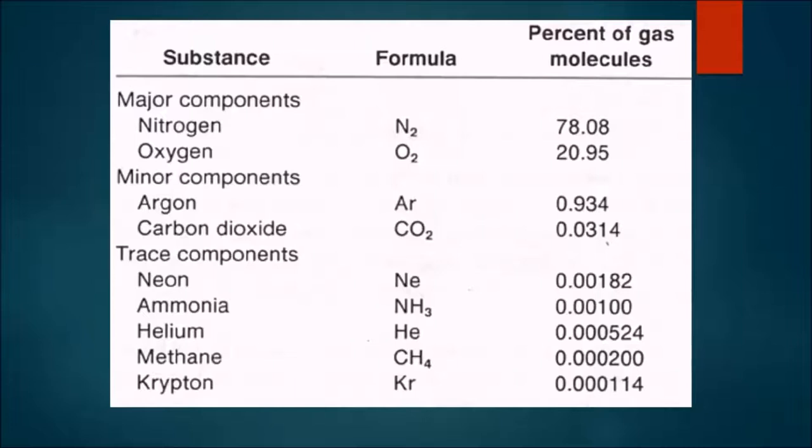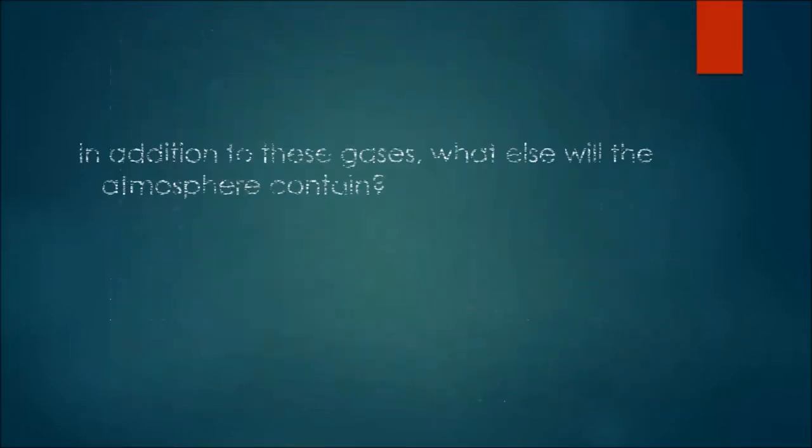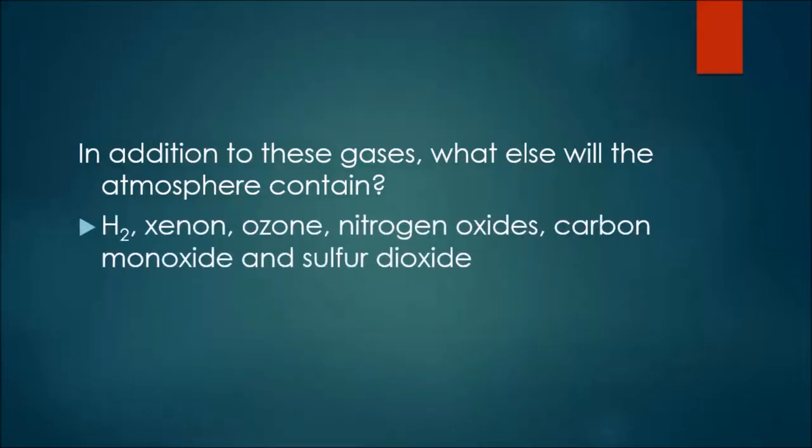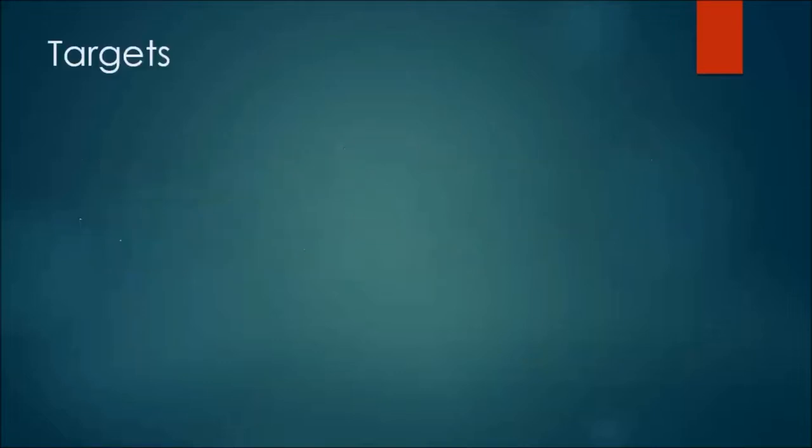Now, if you were to seal up this room, prevent any air from coming in, what's going to happen to us eventually? Because we will use up not all, but a lot of the oxygen, and we will replace it with carbon dioxide. Notice there's some trace amounts of everything else, but pretty much oxygen and carbon dioxide is what's going to change over time. In the morning, of course, we do produce a little more methane. What's methane? Natural gas. Our bodies produce it. In addition to these gases, the atmosphere contains trace amounts of hydrogen and xenon. Those are okay, but ozone, nitrogen oxides, carbon monoxide, sulfur dioxides are deadly.